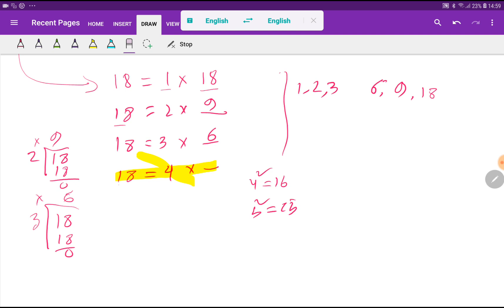So we should stop. We don't need to check for 5. As 18 is not completely divisible by 4, and the square of the next number, 5, is 25, there is no possibility of dividing 18 without any remainder by 5. So we should stop here.